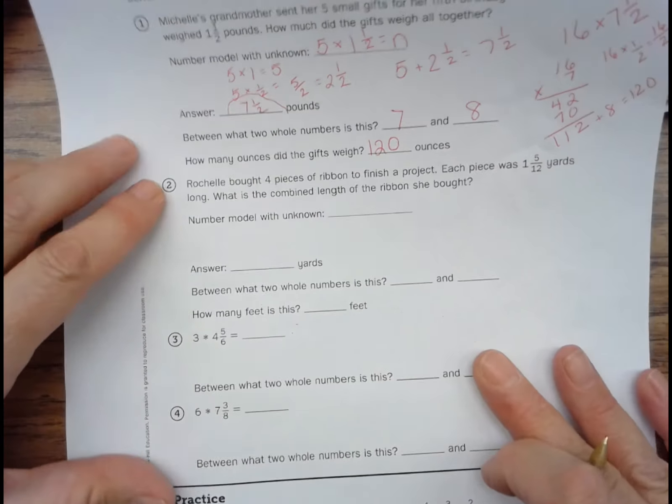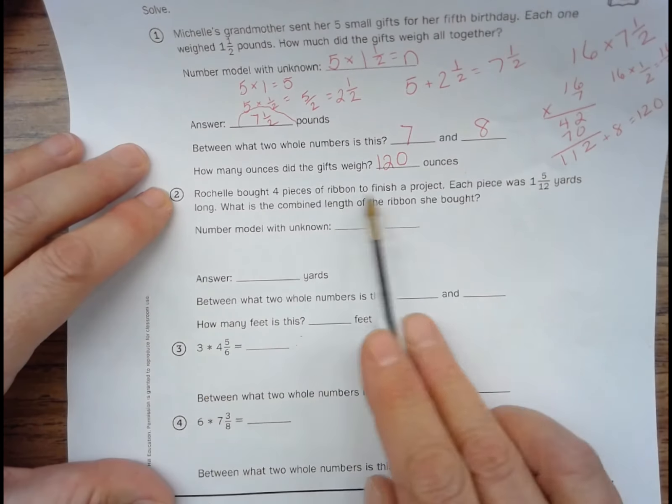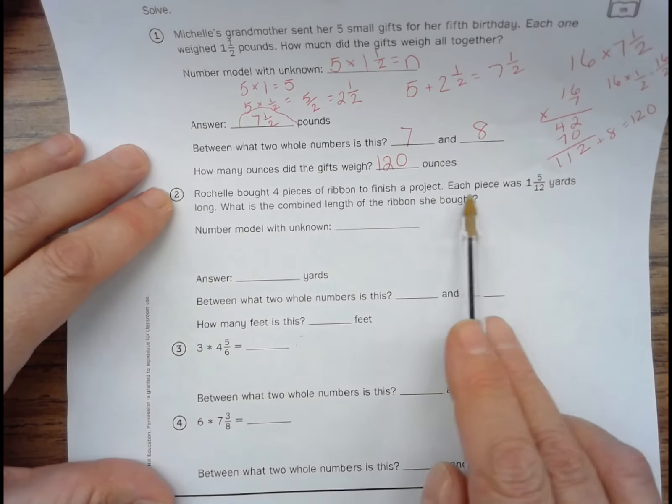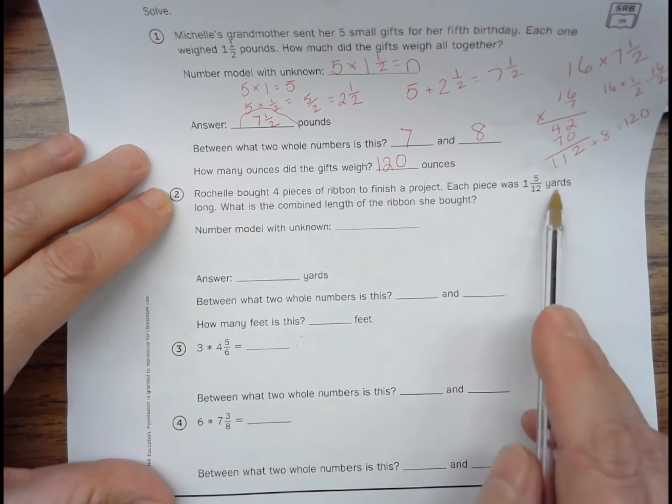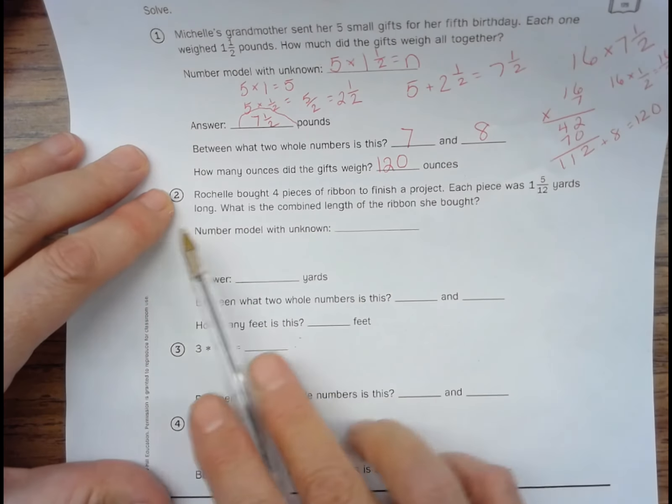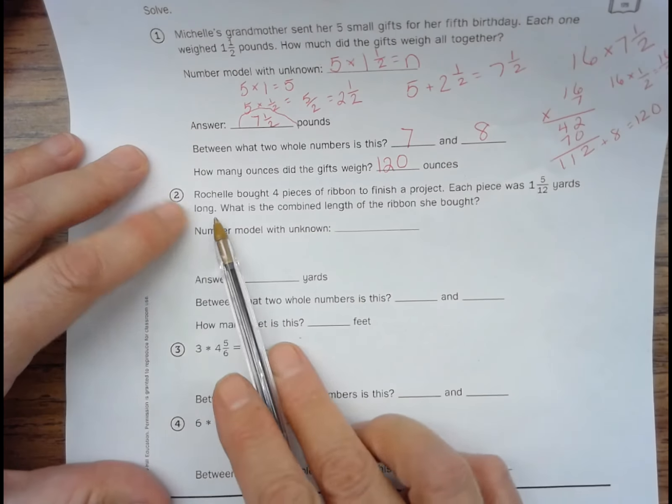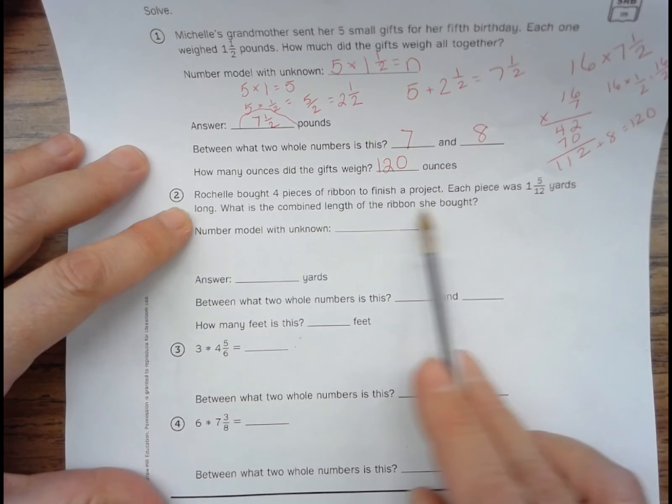Number two. Rochelle bought four pieces of ribbon to finish a project. Each piece was one and five twelfths yards. What is the combined length of the ribbon she bought?